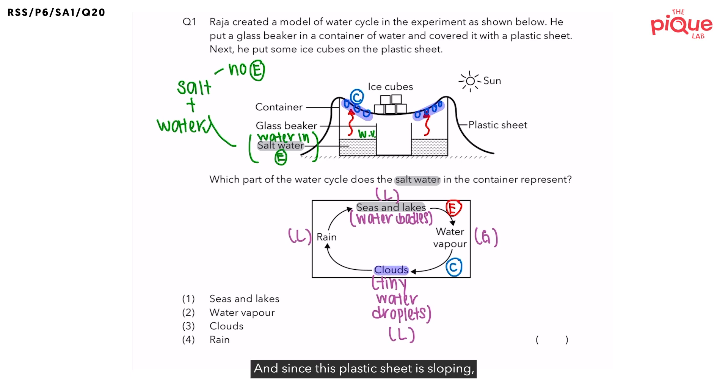And since this plastic sheet is sloping, the tiny water droplets will slide down the middle and drip into the glass beaker to be collected as water. Just like how rain drips down from the clouds. So not only do these tiny water droplets represent the clouds, they also represent the rain.